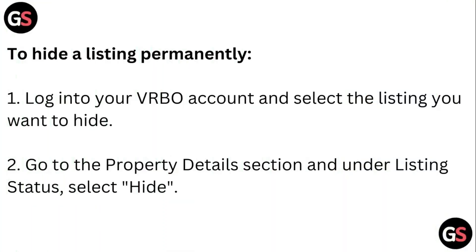Step 1: Log into your Vrbo account and select the listing you want to hide. Step 2: Go to the property details section, under the listing status, and select hide.